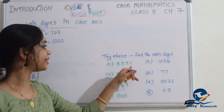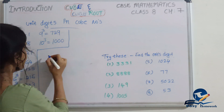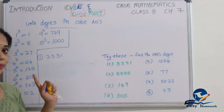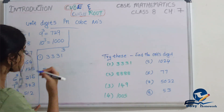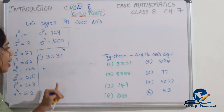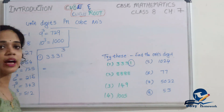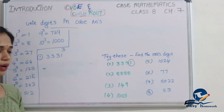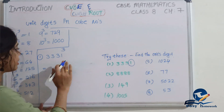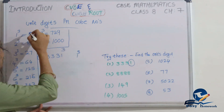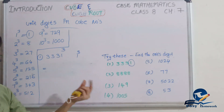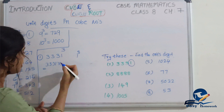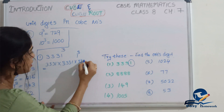First number: 3331. We need to find the unit digit of 3331 cubed. Look at the unit digit of 3331 — it is 1. So we calculate 1 × 1 × 1 = 1. The unit digit of 3331³ is 1.